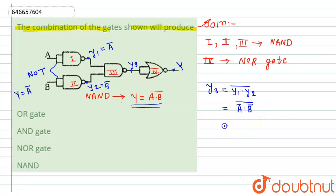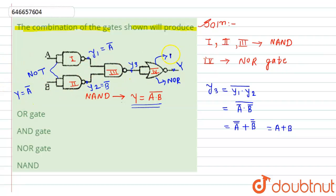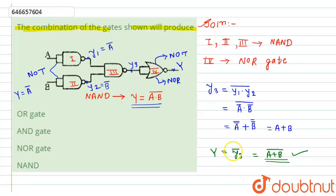By applying De Morgan's rule, (Ā·B̄)̄ = Ā̄ + B̄̄ = A + B. So Y3 = A + B. Now Y3 goes into the fourth gate. Since both inputs of the fourth gate are joined together, it works as a NOT gate, giving Y = Y3̄ = (A + B)̄. This Boolean expression represents a NOR gate.